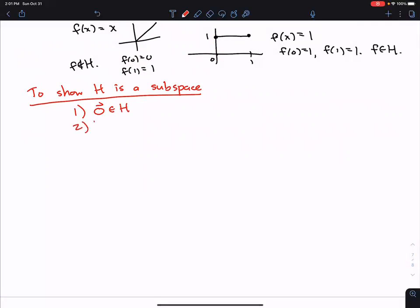First, we need to show the zero vector is inside of H. Second, we need to show if, and I'll use F and G because we're talking about functions, but you could write u hat v hat if you wanted to. So if two functions are in H, then their sum is also in H.